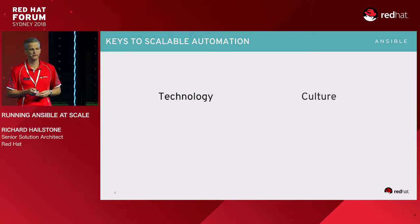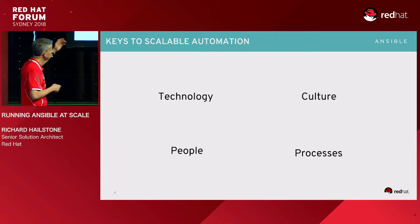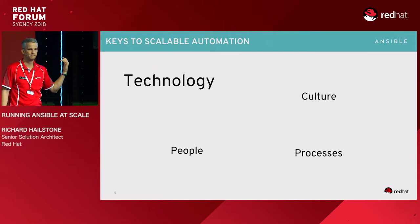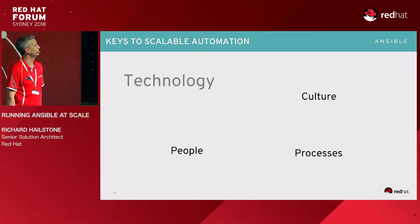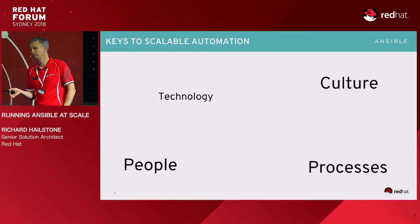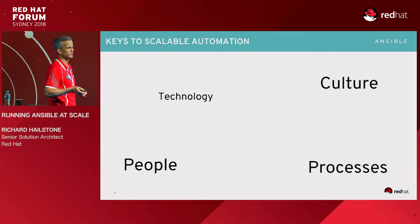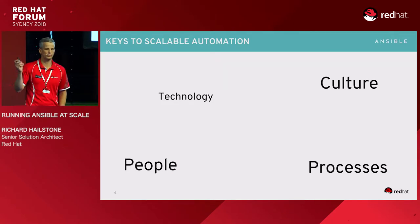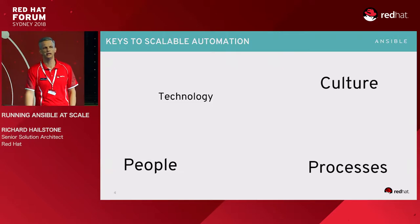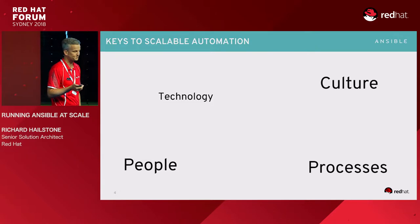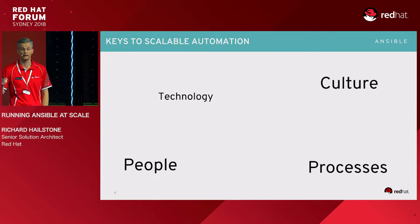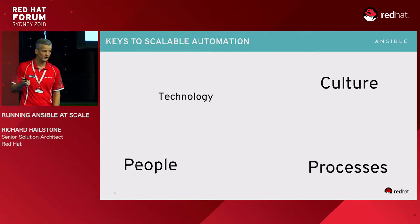What are the keys to building a scalable automation solution? It's probably not what you think. It is a technology problem, but it's also a problem of culture, people, and processes — and those are almost more important. People look at this problem and think they need a really big hammer and throw technology at it, but the technology is only a small part of the picture. For companies with one or more employees, you have to get the culture right.